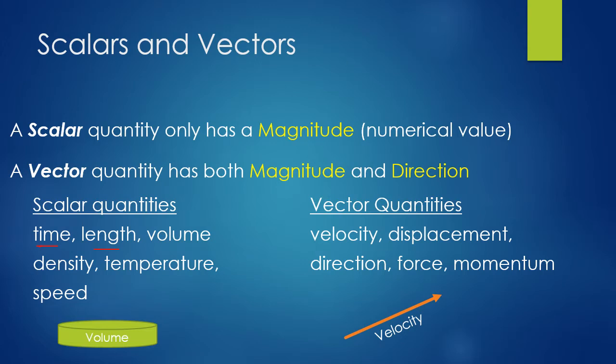A vector quantity has both magnitude and a direction. An example of a vector quantity is velocity. Say you're driving in a car and you look at your speedometer — you're going 60 miles per hour. The speed reading on the speedometer is a scalar quantity, just a number with units. However, velocity is a speed with direction. If you were going 60 miles per hour southwest, that would be a velocity — a vector quantity — because you have the magnitude and the direction.